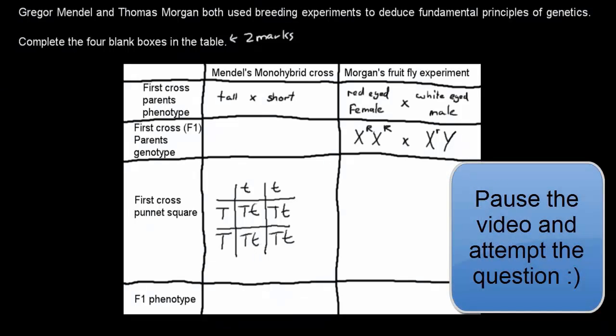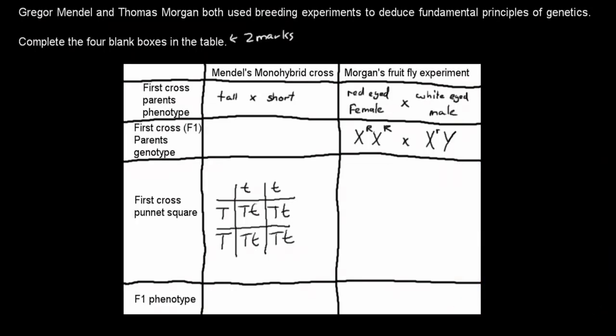Alright, welcome back. For this question you have to fill in the missing parts. We'll start with Mendel's monohybrid cross. We know that the first cross, the parent generation, had a tall and a short. It's asking for the genotype of the tall and short. What were the genotypes?